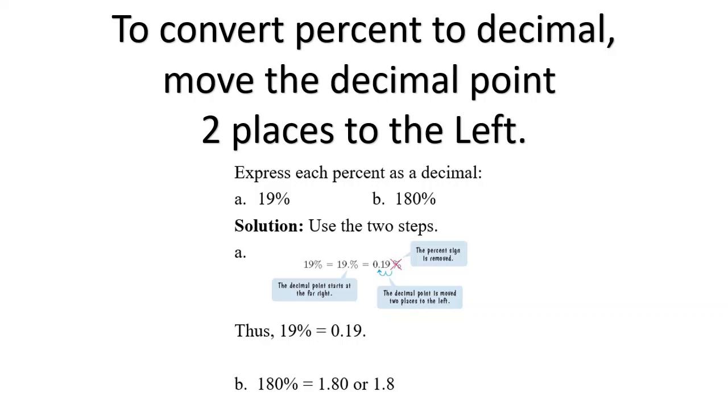Now in 19%, there is no decimal point given, so it's understood behind the 9. Then you move that two places to the left, and that would be 0.19.